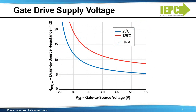Here we can see the device on-resistance on the vertical axis versus gate voltage on the horizontal axis for a 100-volt eGaN FET. It is possible to drive these enhancement mode devices with gate voltages as low as four volts without a significant increase in RDS ON. Furthermore, it is recommended to keep the gate driver voltage below 5.25 volts to allow enough margin between the gate voltage and the absolute maximum gate voltage of six volts. The full recommended gate voltage range is shown in the rectangular box.